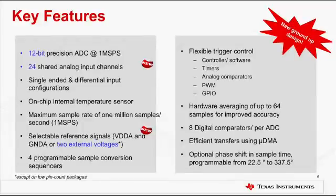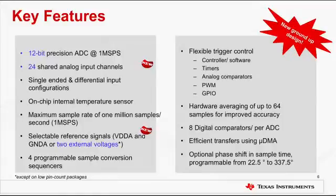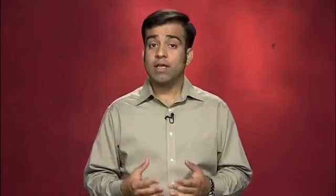The ADC modules also have a hardware averaging circuit that can be used to average up to 64 samples for applications that involve higher accuracy. Each ADC module can be triggered from software, or the processor, or from other peripherals like timers, comparators, PWM, and GPIOs. There are eight comparators per ADC module. DMA may be used to increase efficiency by allowing each sample sequencer to operate independently and transfer data without processor intervention or reconfiguration. ADC module also features optional phase shift in sample time, and we will talk about this feature in more detail as we go along.